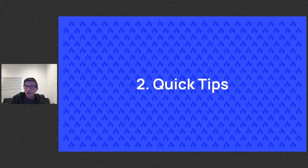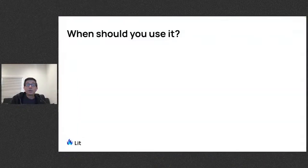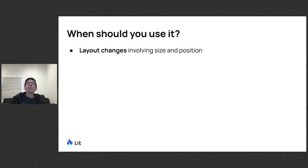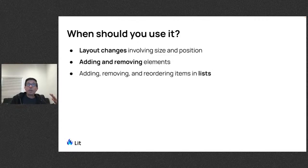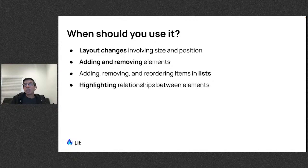Let's look at some tips for using the animate directive effectively. Great use cases include: layout changes involving size and position, adding and removing elements, working with lists where Lit is great at declarative rendering, and highlighting relationships between elements.